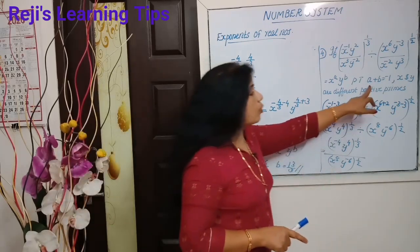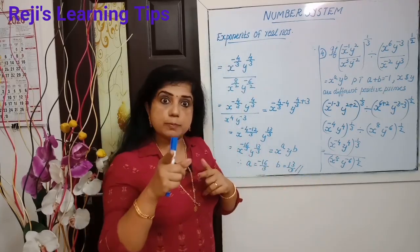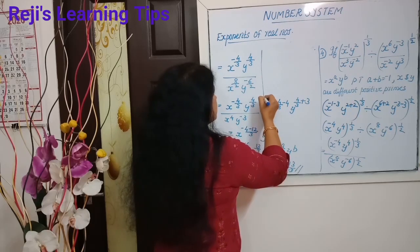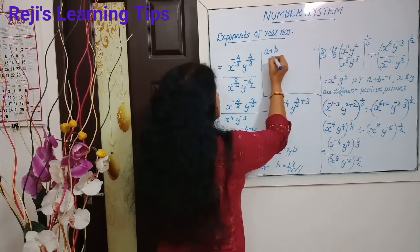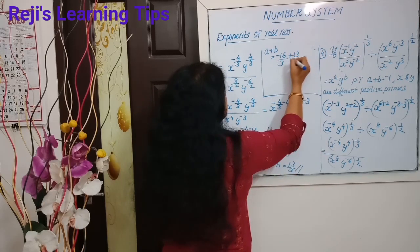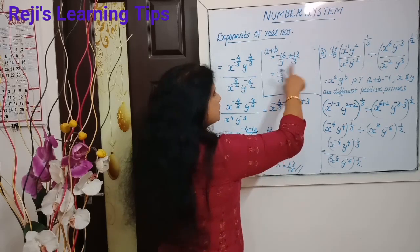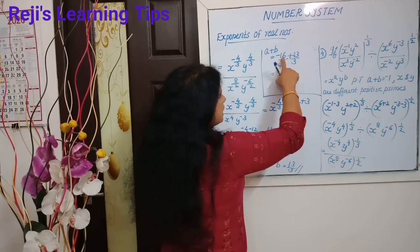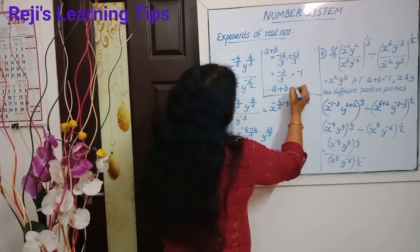Okay, now we have to prove that a plus b is equal to minus 1. A plus b is equal to minus 16 by 3 plus 13 by 3. The denominator will be the same and the numerators will be added. So minus 16 plus 13 means minus 3 by 3, that is equal to minus 1. Therefore, a plus b is equal to minus 1.